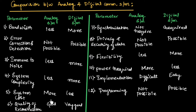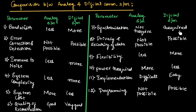The quality of reconstruction of the signal is good in the analog system, and in the digital system, the quality of reconstruction of the signal is very good. The analog system does not require synchronization between transmitter and receiver, but in the digital system, synchronization between transmitter and receiver is required.